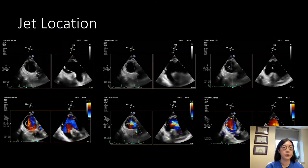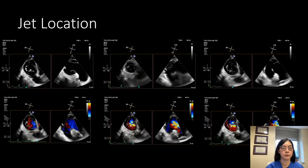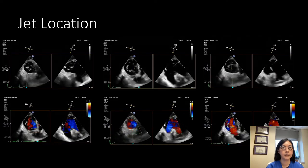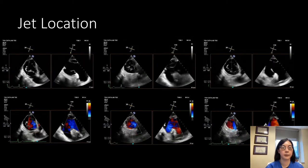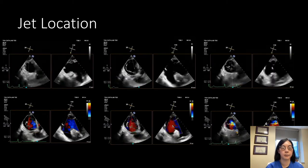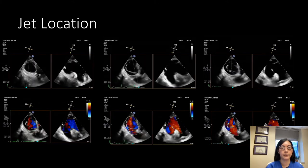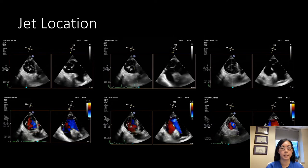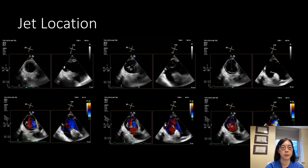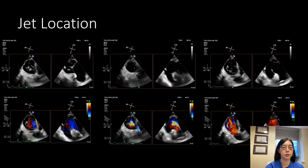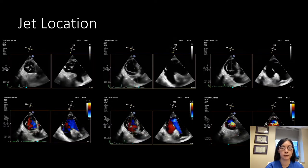We do a series of images in the transgastric views where we cut through the anterior and posterior leaflets, taking images with and without color to see where the jet is originating and what the views look like. In this patient there's a large central jet, but there is also jet coming from between the posterior and septal leaflets as well as the anterior and septal leaflets.